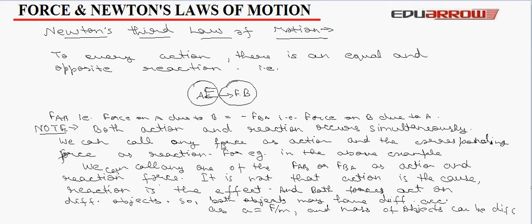We can call any force as action or reaction. For example, in the above example, we can call any one of the forces F_AB or F_BA as action and the corresponding reaction force. It is not that action is the cause or reaction is the effect. It is just that the forces are equal and opposite. So, we cannot call F_AB as the action or F_BA as the reaction specifically. And both forces act on different objects. So, both objects may have different acceleration. As we know that A is equal to F upon M and mass of objects can be different.